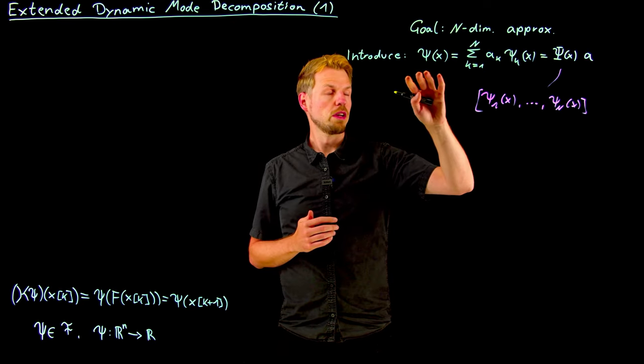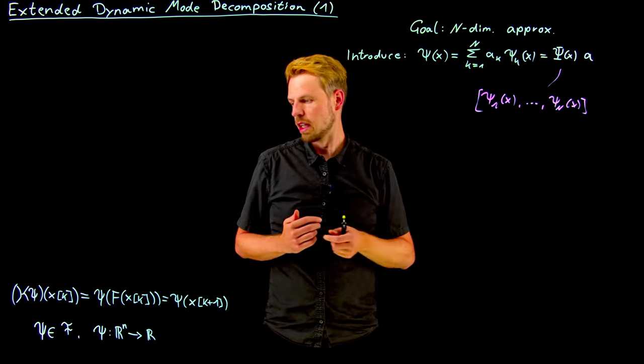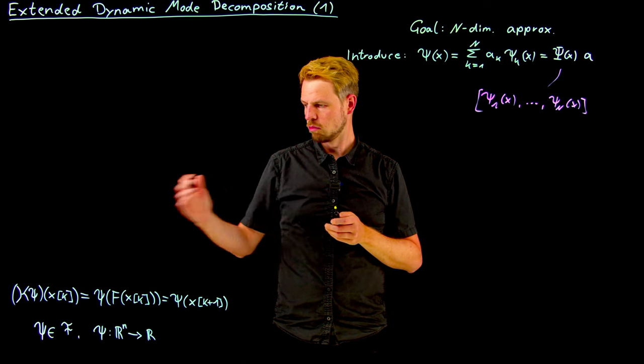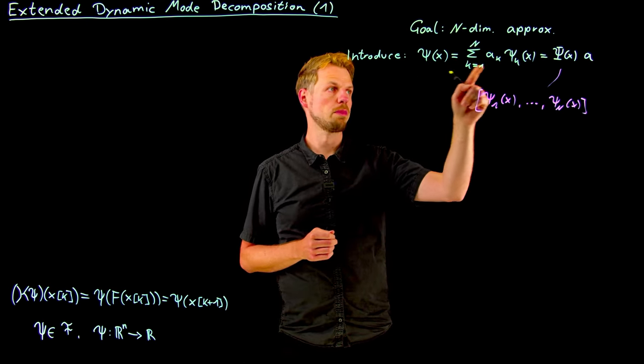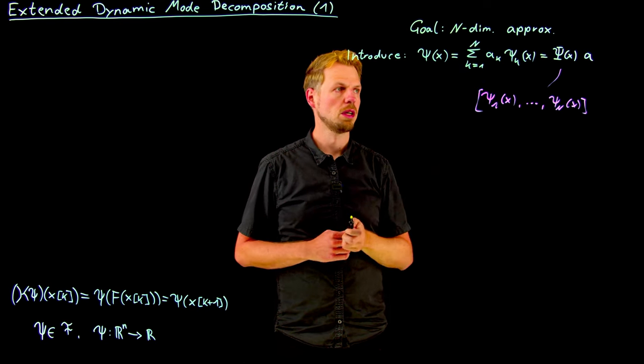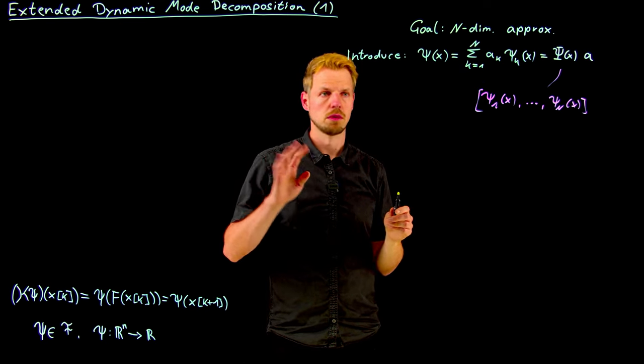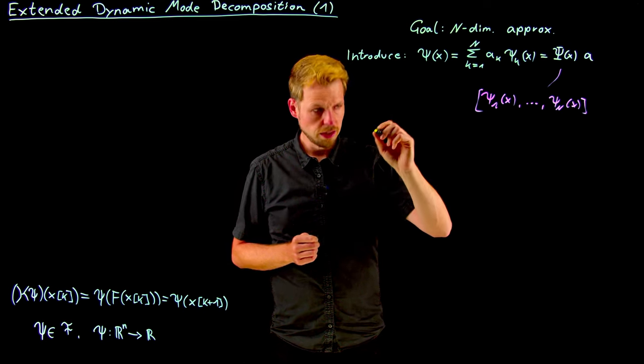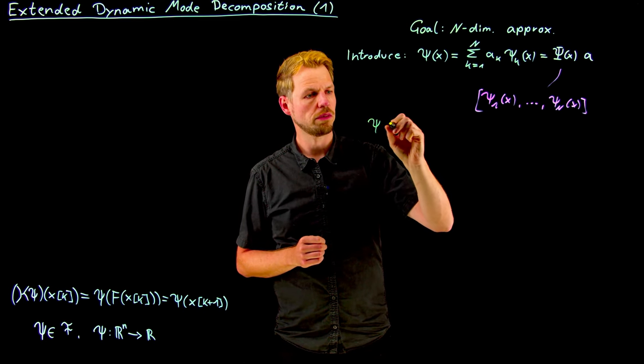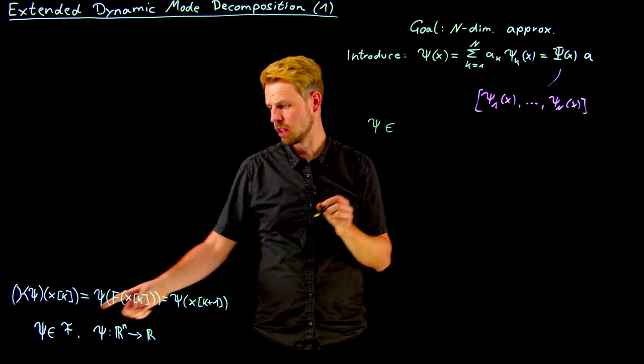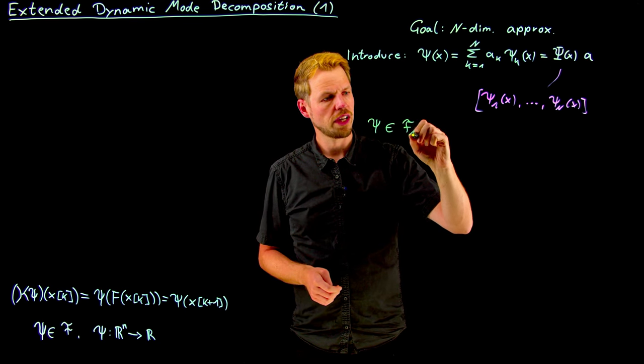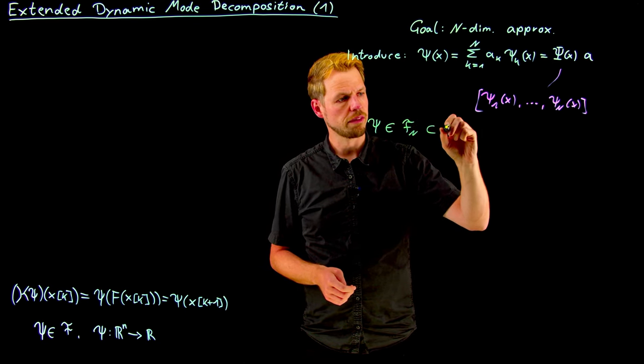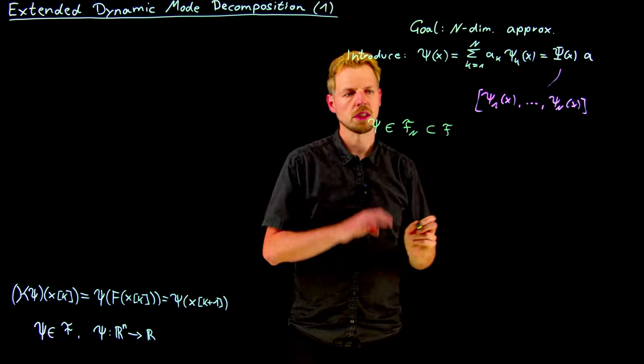So now we have introduced this and what we can do now is use the rule for our Koopman operator to see what happens with the dynamics of this particular function. However, what we need to consider is that our psi now is not an element of this function space anymore, but it's the element of a subspace F_n, an n-dimensional subspace that is precisely spanned by these n basis functions.